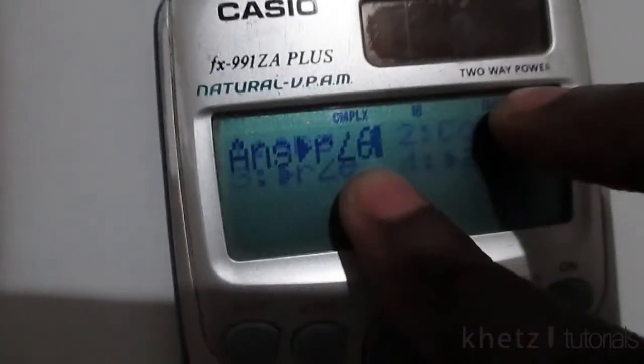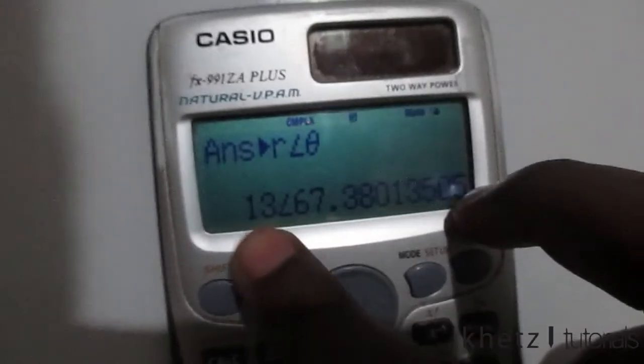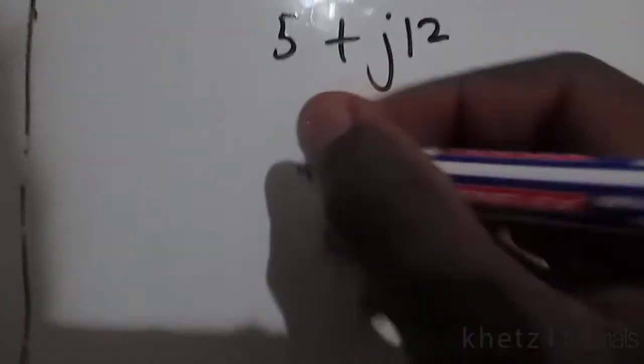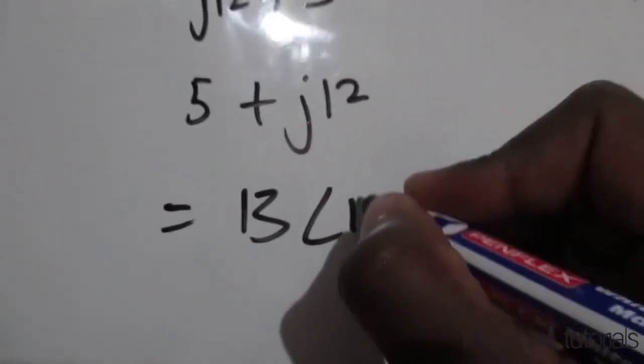Which is the form which you're actually looking for, so you're going to pick option 3 and say equals. Now this gives us 13 with an angle of 67.38°.